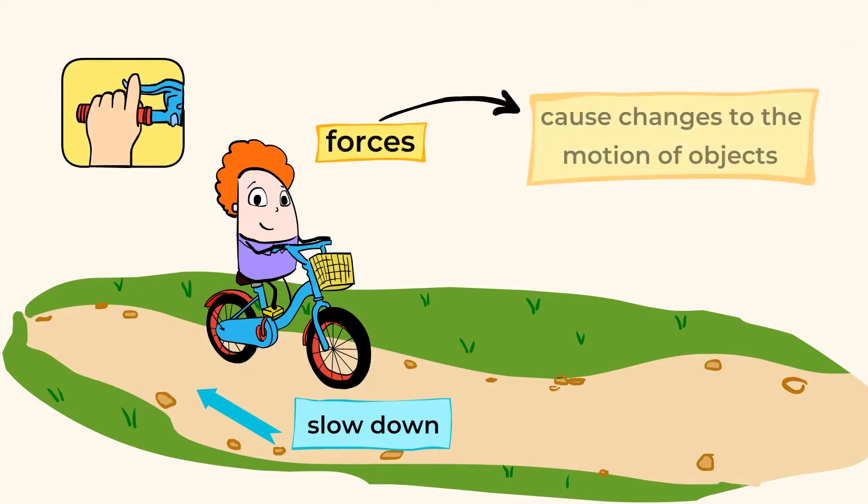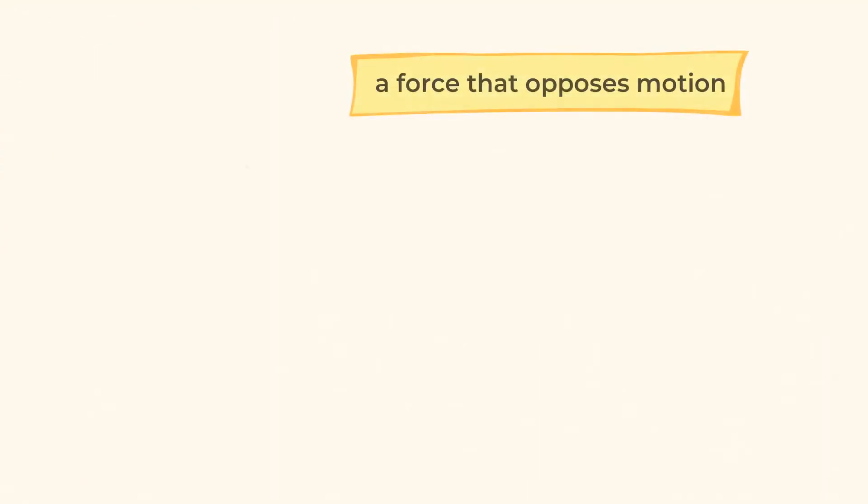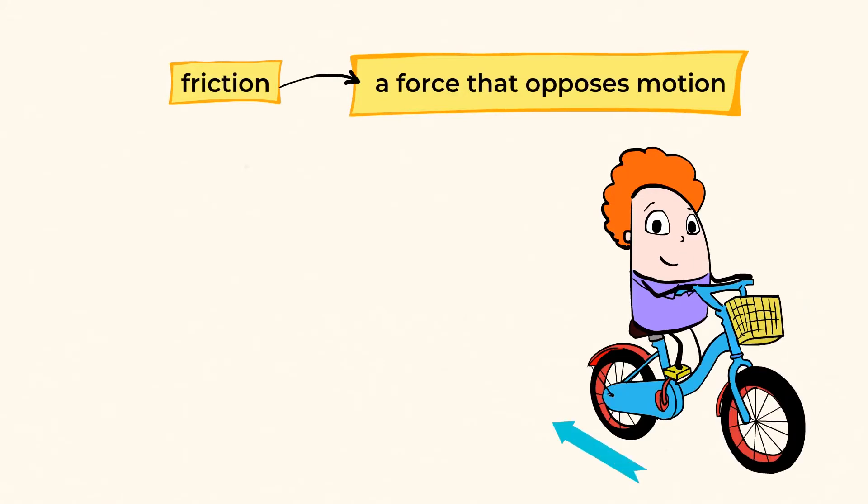There are forces around us that cause changes to the motion of objects. Let me explain. A force that opposes motion is called friction. It has the power to slow things down. Friction is present wherever two surfaces rub over each other, such as using the brakes on a bike to stop or to slow down.